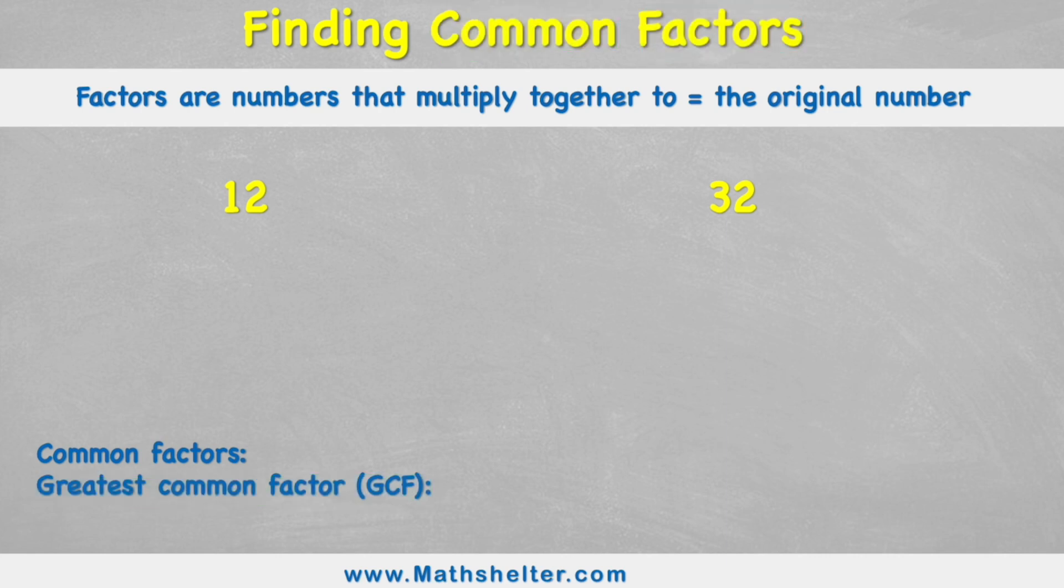Now when we're trying to find factors it's very helpful to draw a factor tree. It looks a little bit like this. Let's take this 12. Our first factor pair will always be multiplying the number 1 by the number itself, because 1 times 12 will always equal 12, which is our given number.